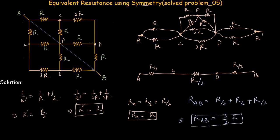This is the equivalent resistance between point A and B, obtained using the rules of horizontal symmetry. As a homework problem, solve the same circuit using the rules of vertical symmetry and post your answer in the comment section below. That's all for today's presentation — if you have any doubts, ask in the comments, and see you in the next one.